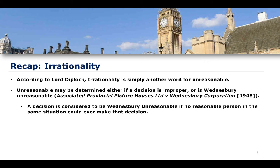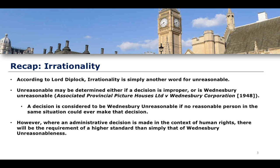Something is to be viewed as Wednesbury unreasonable if no reasonable person in that situation could ever make that decision. That is a higher standard than you might initially think — it's not simply that a reasonable person wouldn't do it, but more specifically that a reasonable person could never do it. It would be impossible for a reasonable person to make such a decision. However, when it comes to administrative decisions made in the context of human rights and the Human Rights Act specifically, there will be a requirement of a higher standard than that of simply Wednesbury unreasonableness.